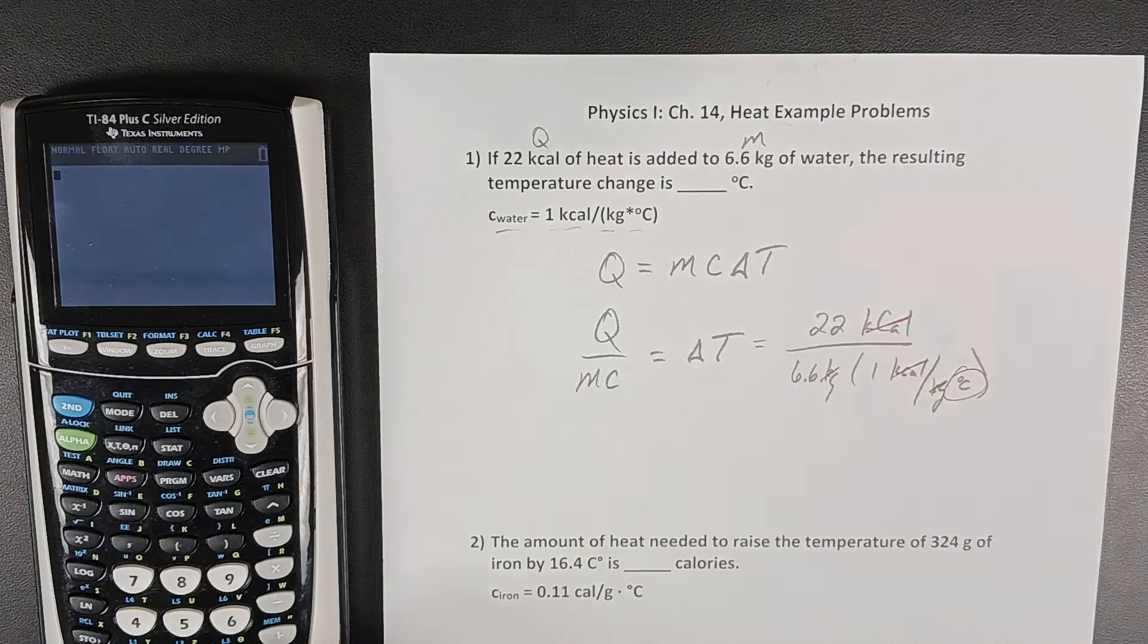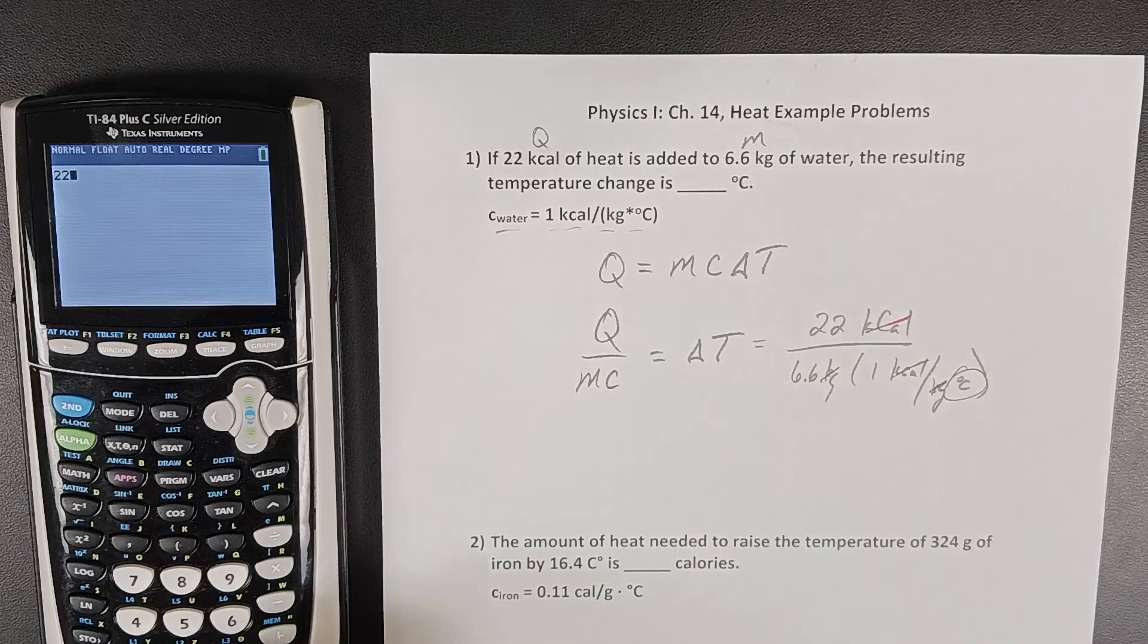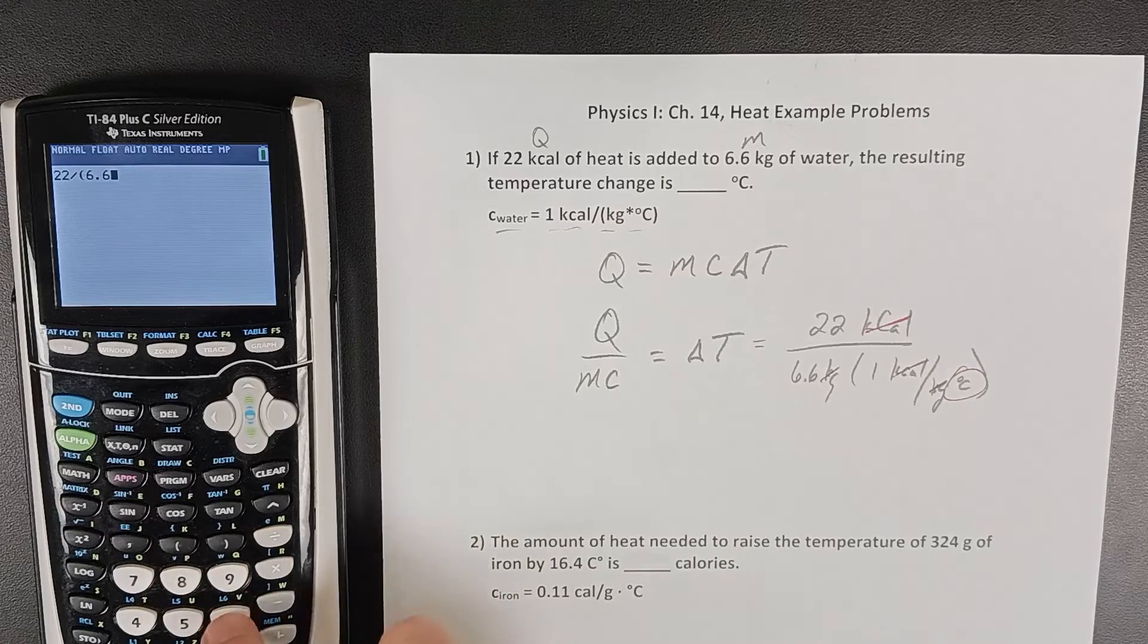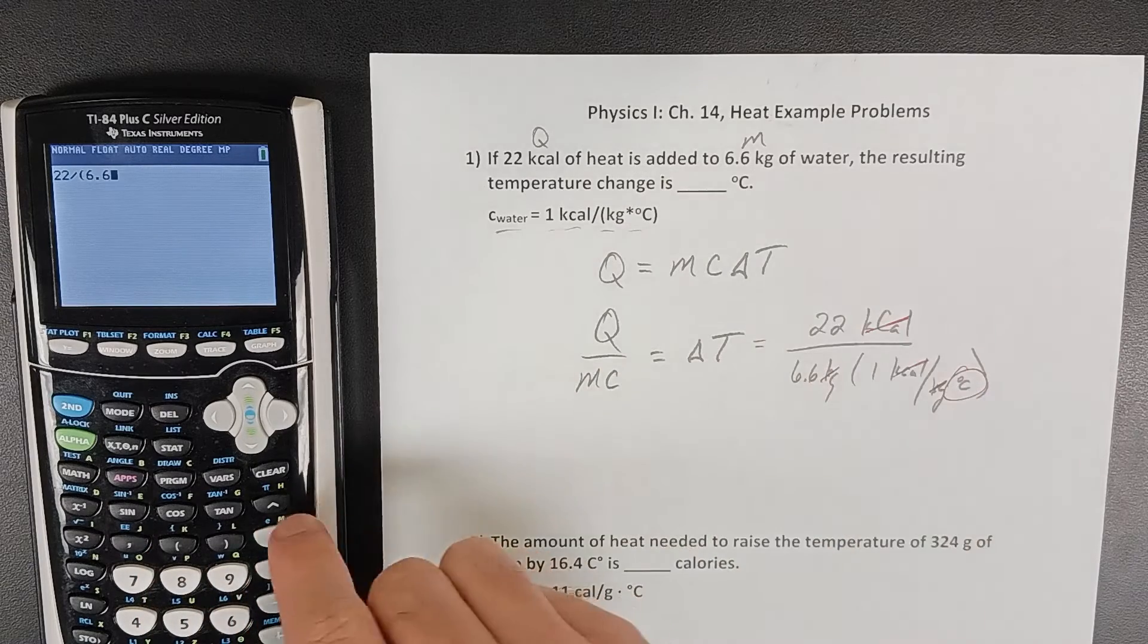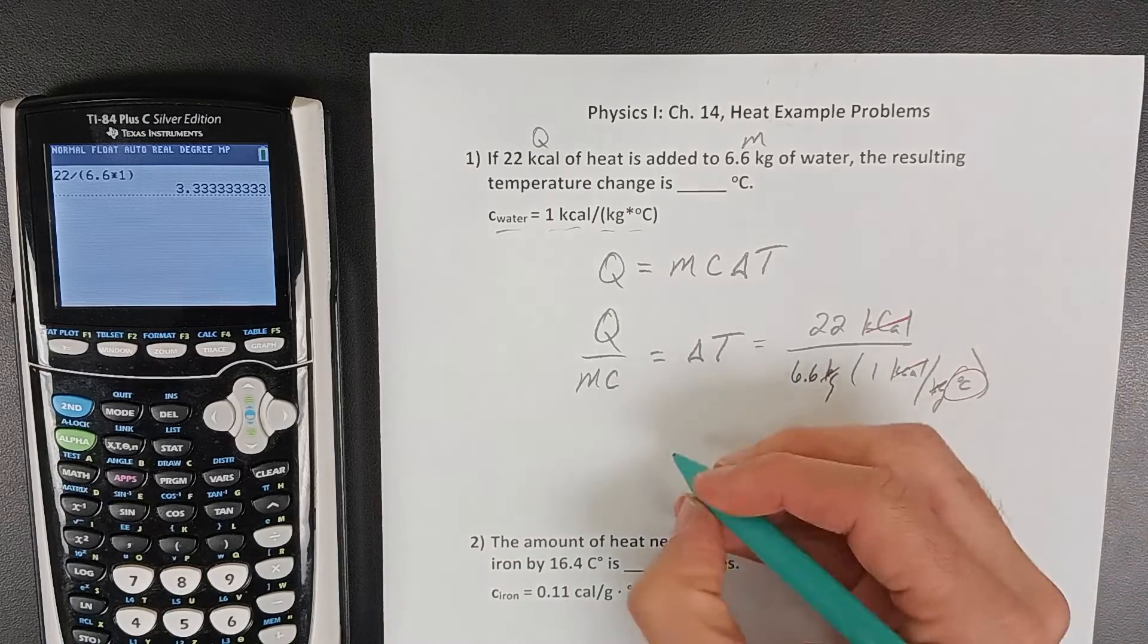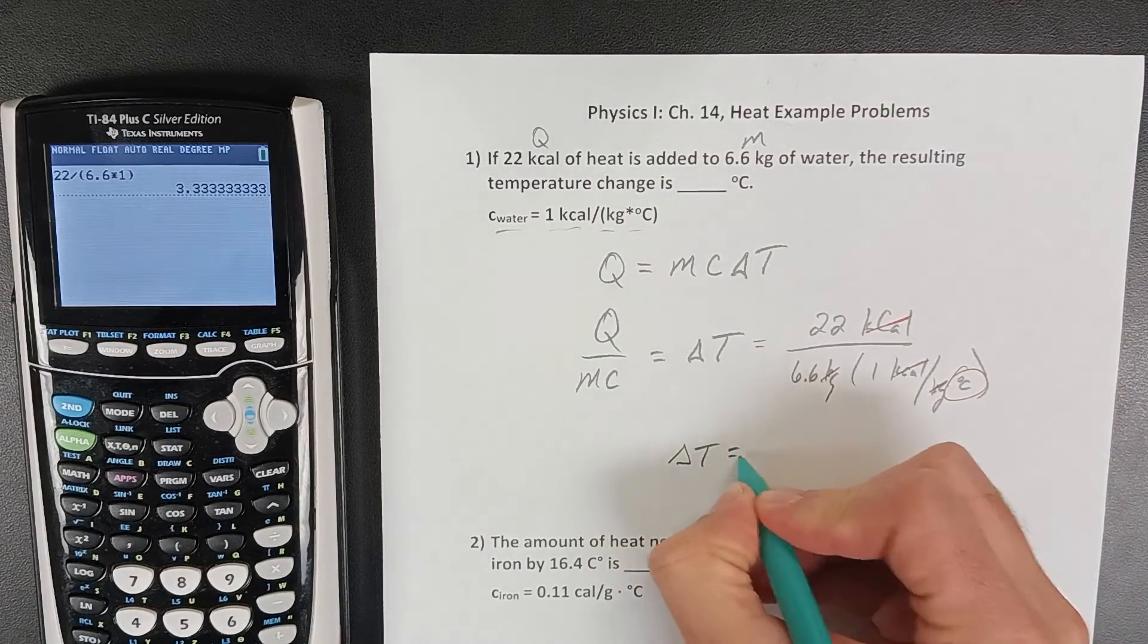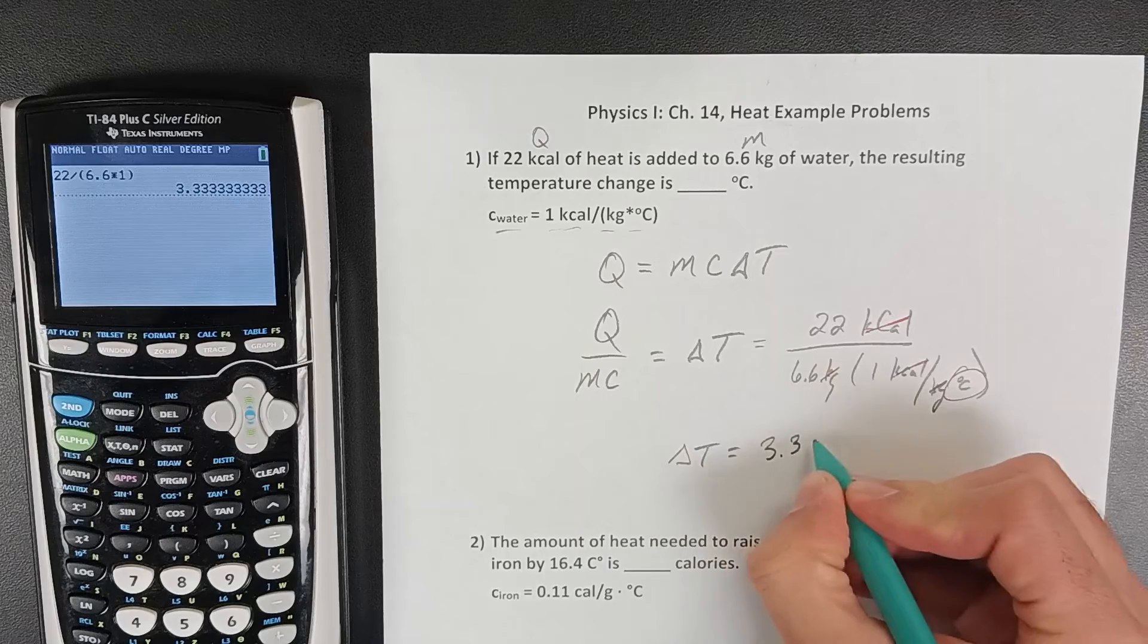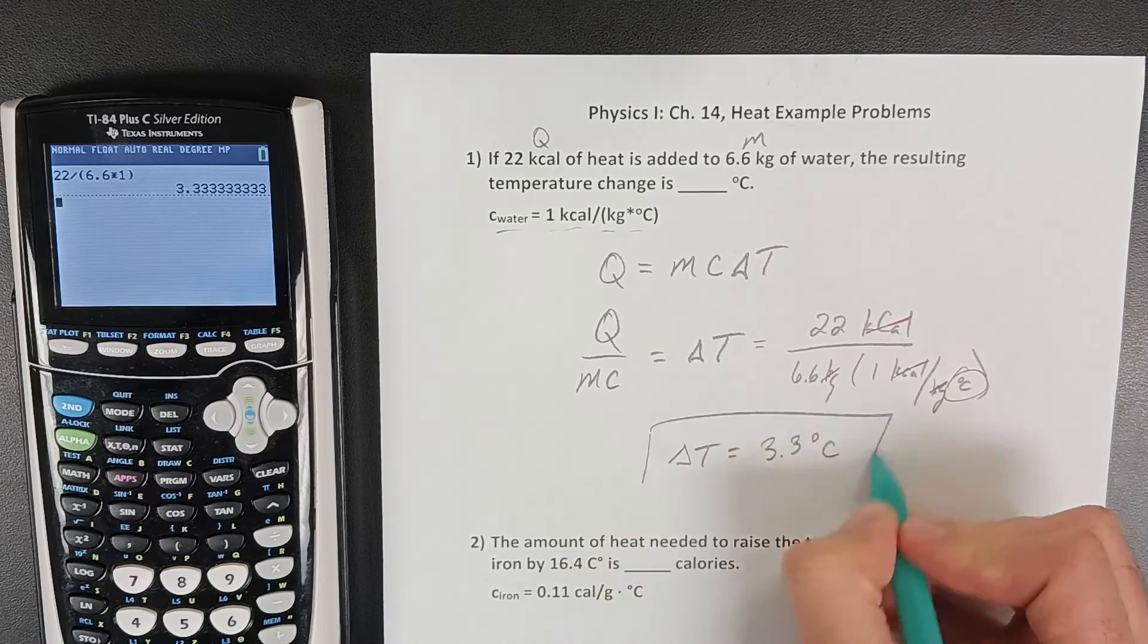We're going to have leftover degrees Celsius, so 22 divided by 6.6 times 1, which is still just 6.6. We get a change in temperature of 3.3 degrees Celsius.